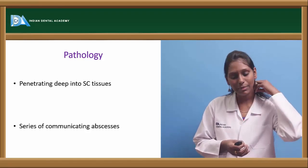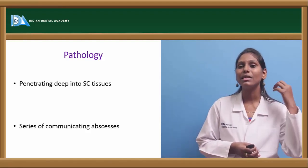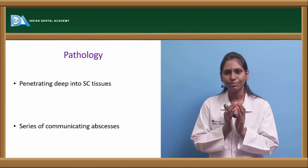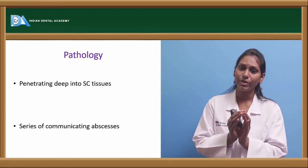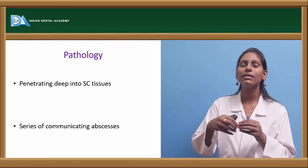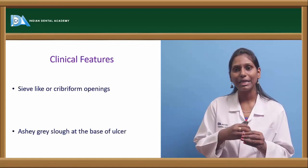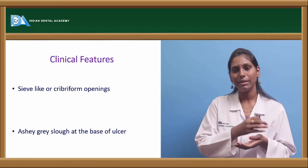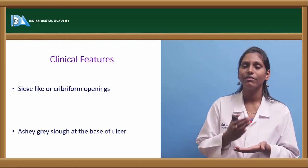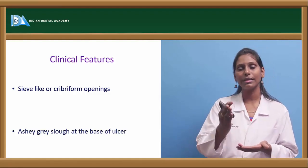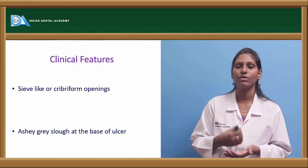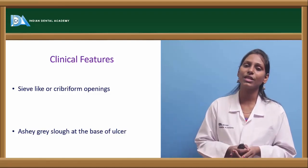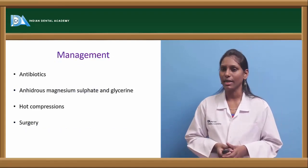Carbuncle occurs when infection penetrates deep into subcutaneous tissues, causing liquefactive necrosis that forms a series of communicating abscesses. These communicate from the center and drain through the surface via multiple sinus openings appearing like a sieve — the pathognomonic cribriform appearance. The floor of the ulcer shows ash-gray slough, which is also a pathognomonic feature.